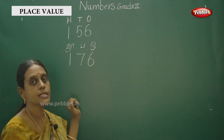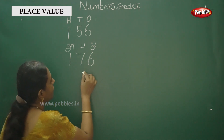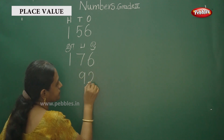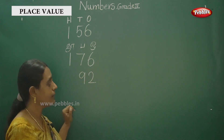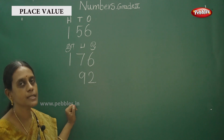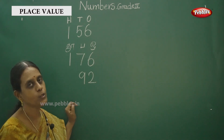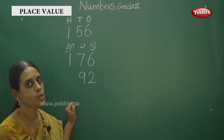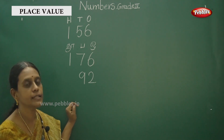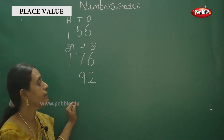Now for place value questions — how do we ask questions? If we ask questions about place value, this number is a 2-digit number. This is only a 2-digit number, this is not a 3-digit number.